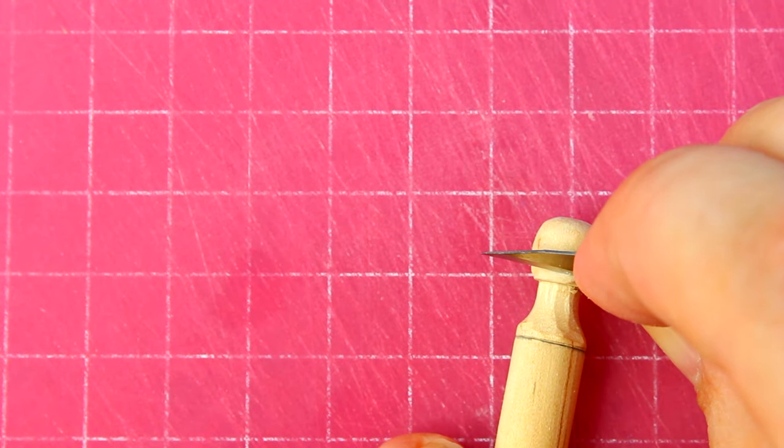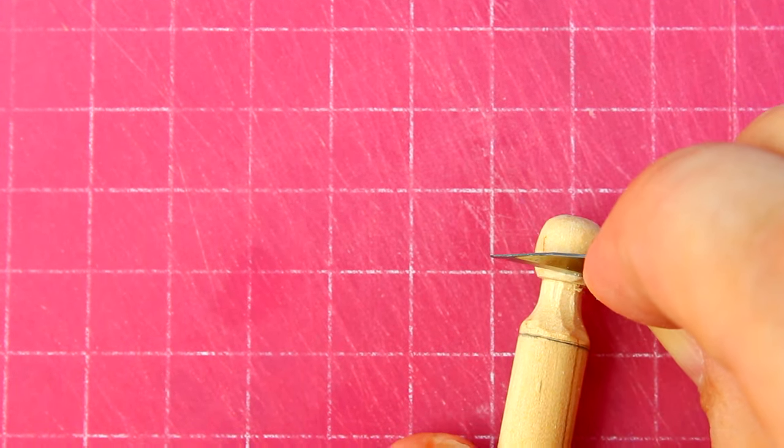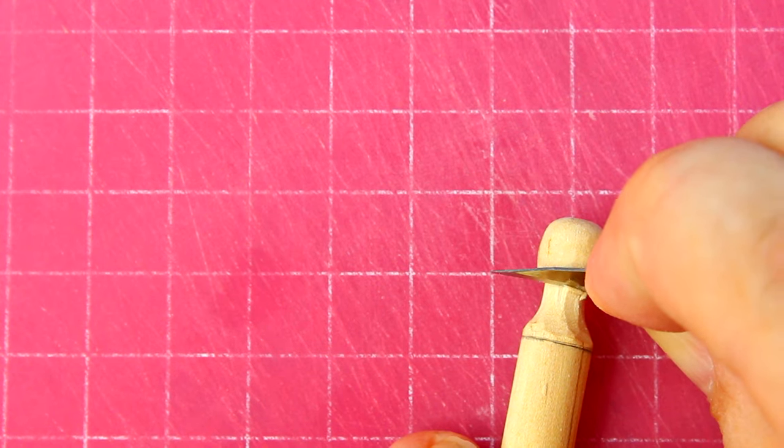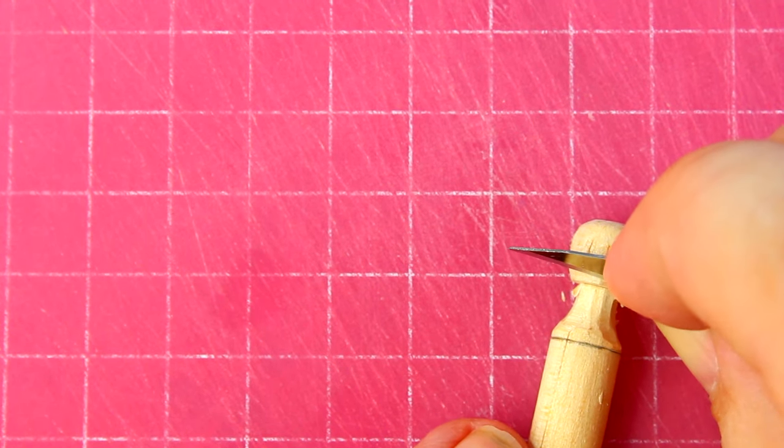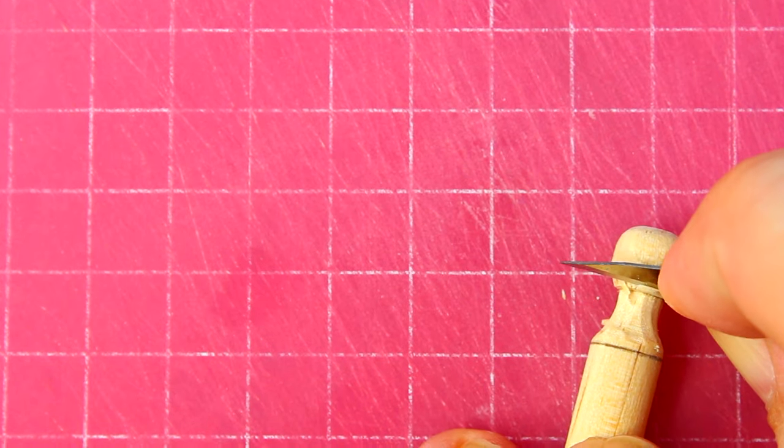I'll get the neck close to where I want it. Let's go back to the ball and refine that some more. I'm just continuing to remove material that doesn't look like the ball I'm imagining in my mind.